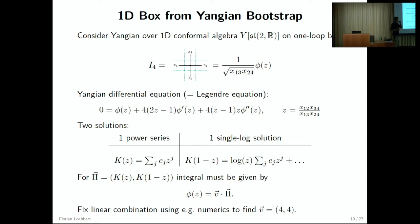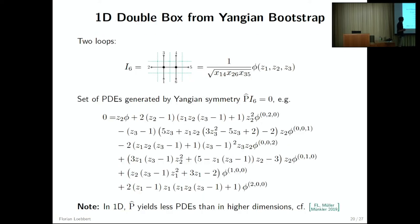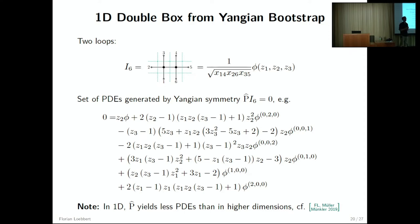Yangian symmetry tells us that the integral is given by this solution vector (K(z), K(1-z)), so we know we can write it as a constant vector contracted with this solution vector. Using some numeric data points one can indeed find that this constant prefactor is just what we saw on the previous slide. If you go to two loops you have three variables, and again you can use the Yangian to generate differential equations — here's an example, a second-order differential equation in these three variables. One important point is that you get actually fewer differential equations than in higher dimensions, because you don't have the spacetime vectors x_mu of which you could argue independence in higher dimensions.